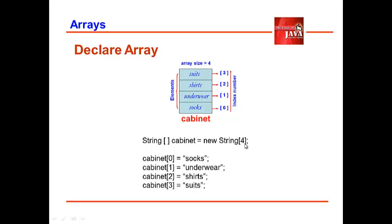To access each element of an array, we use square brackets after the variable name with its index number. So the statements cabinet[0] equals socks, cabinet[1] equals underwear assign values as elements of an array corresponding to their index number.